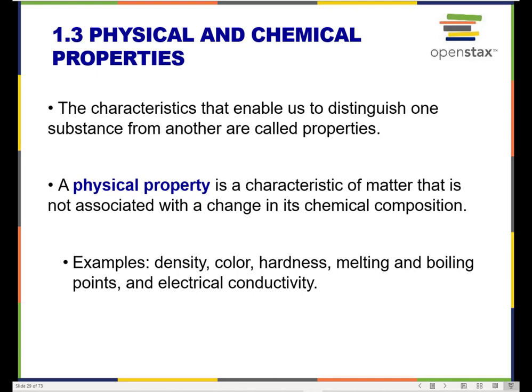A physical property is a characteristic of matter that can be assessed without the matter undergoing a chemical change. Examples of this are density, color, hardness, melting and boiling point, and electrical conductivity. I can observe the color of a substance with my eyes without that substance having to undergo some kind of change. So any time I can observe a property without the substance having to change, that's a physical property.